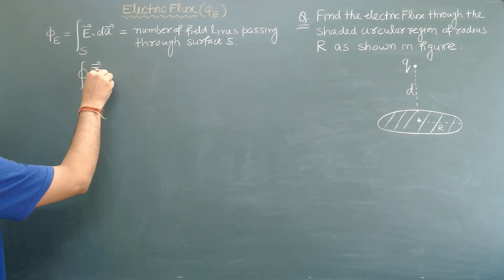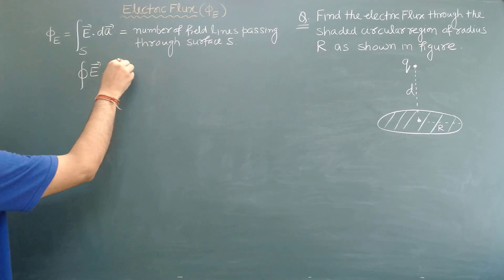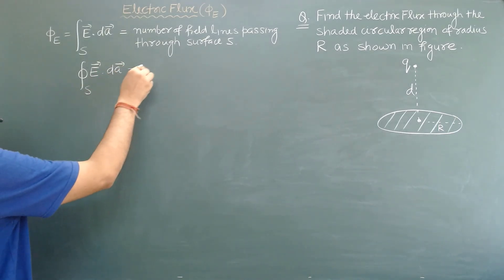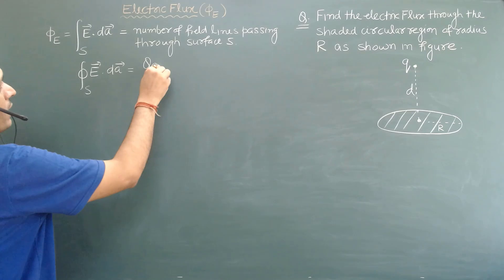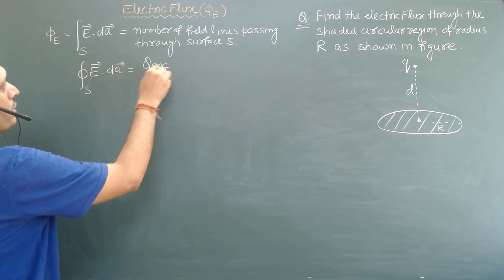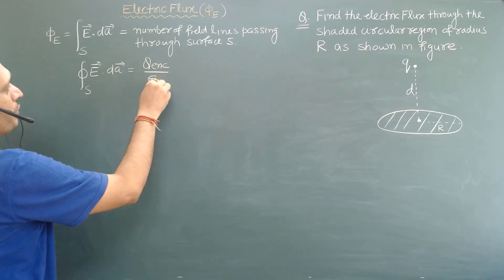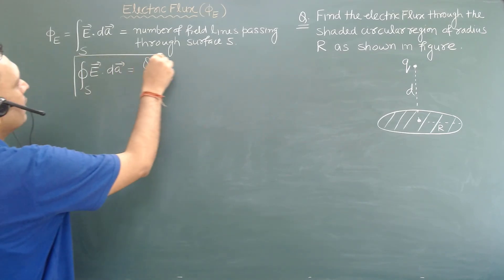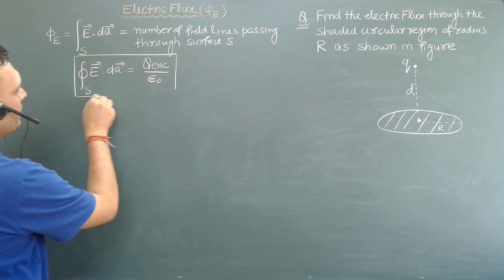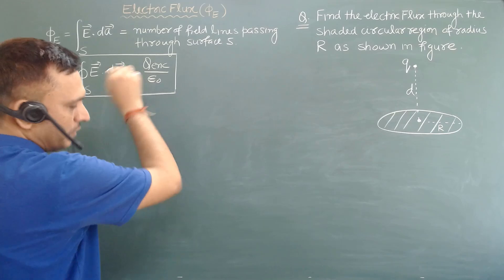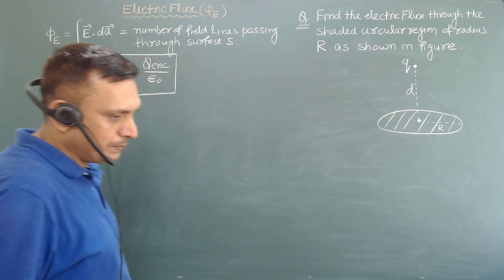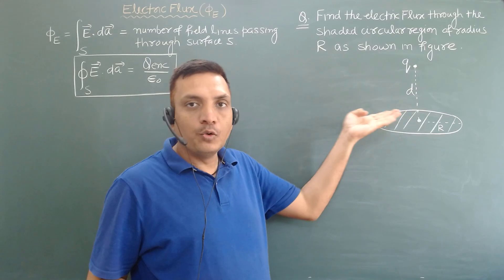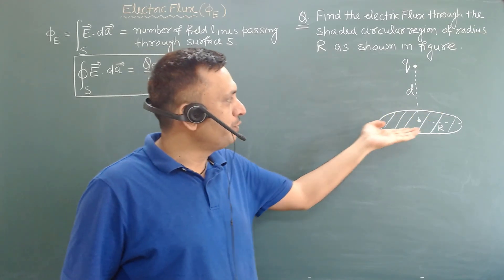This is for an open surface. If you calculate the same thing for a closed surface, the flux through any closed surface is given by the charge enclosed within that surface divided by epsilon naught — and that is Gauss's law.